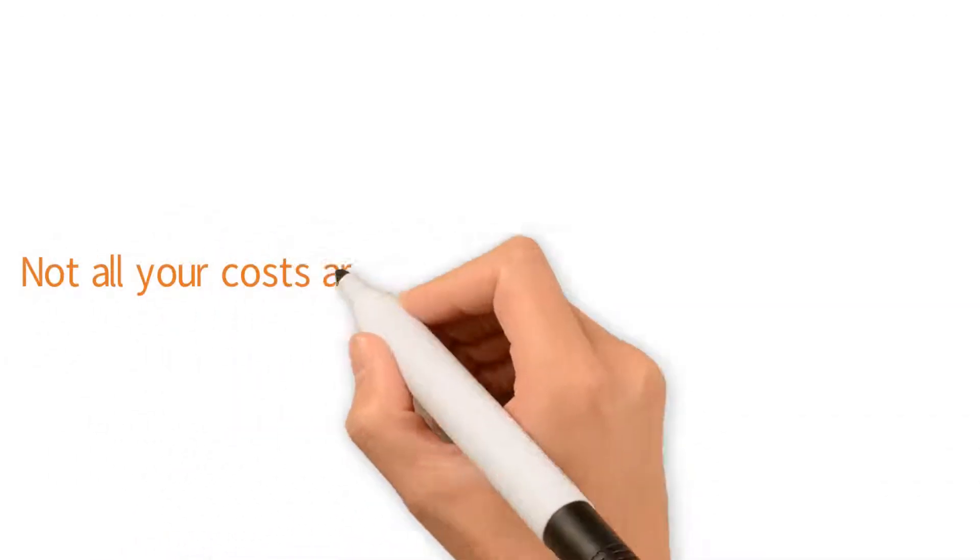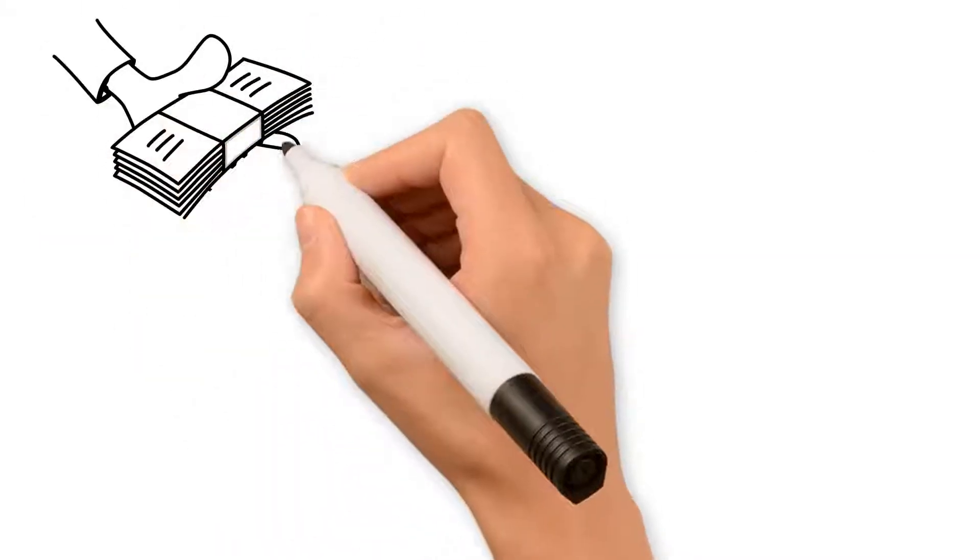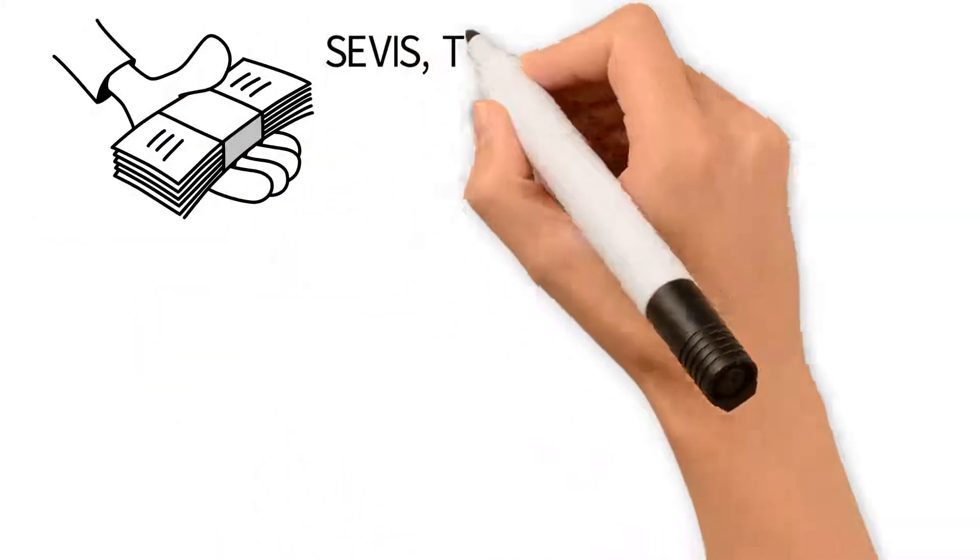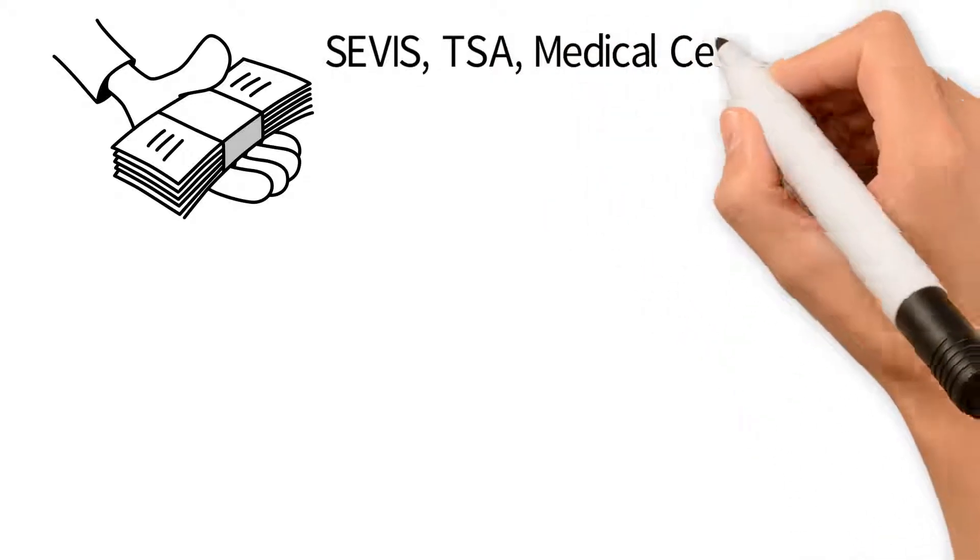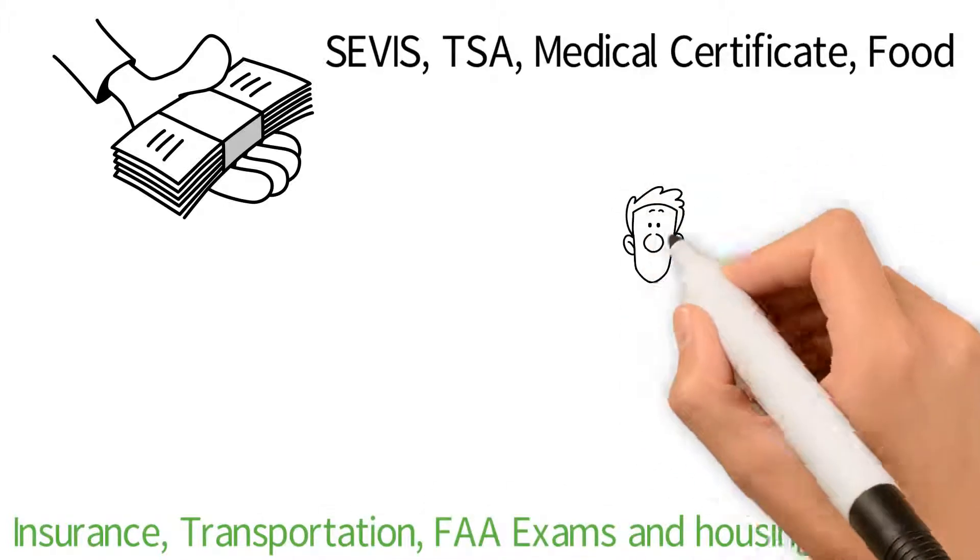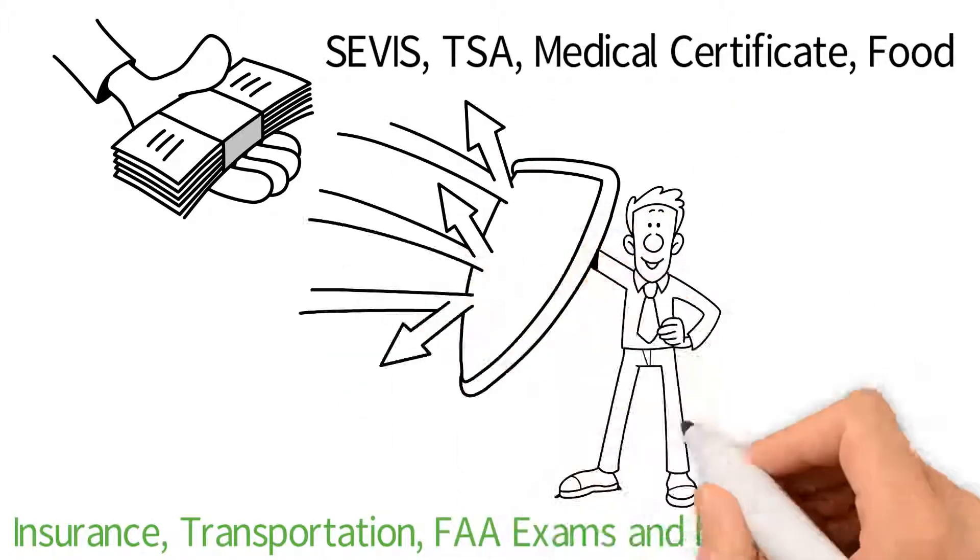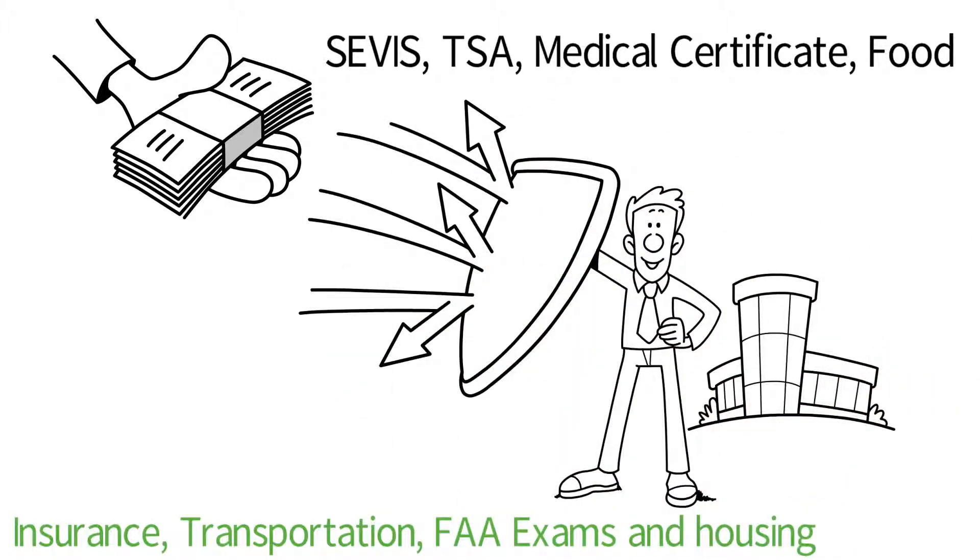Furthermore, quotes don't include all the costs you will actually incur. It's important to make sure you understand that you might have to pay extra for your SEVIS, TSA, medical certificate, food, insurance, transportation, FAA exams, and housing. There are lots of small hidden costs to watch out for, and you should have a contract that explains them and protects you.